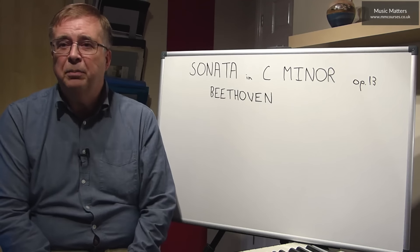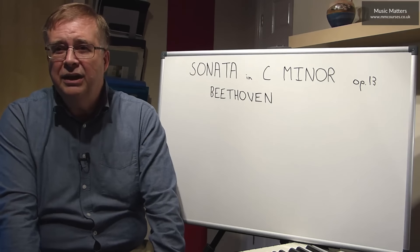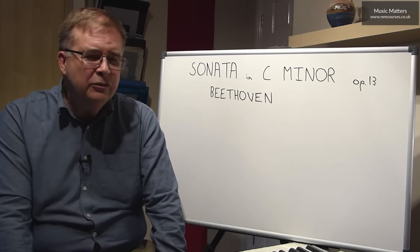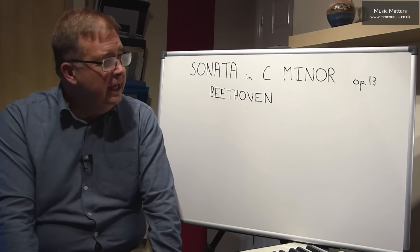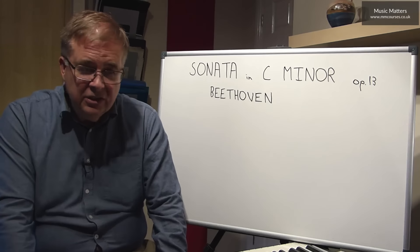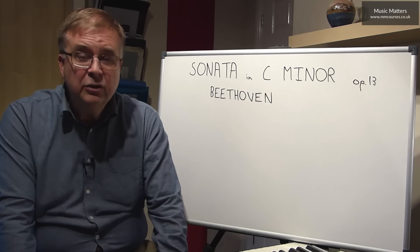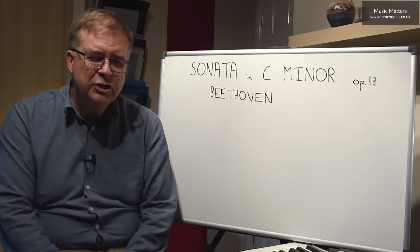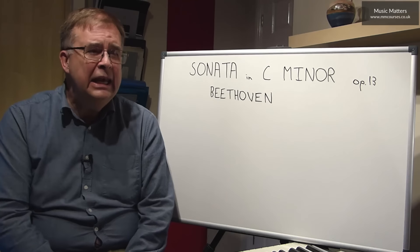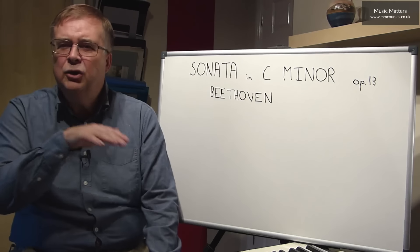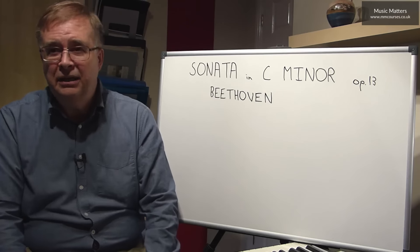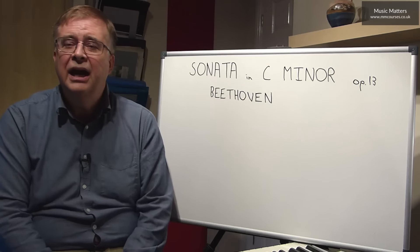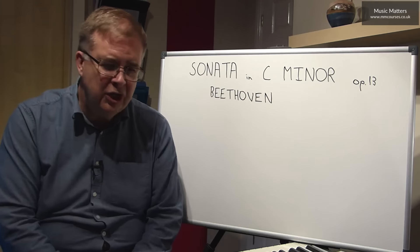This sonata is also known as the Pathétique. It's not a title that Beethoven gave to it, but certainly the title that his publisher favoured. Written in 1798, when Beethoven was 27, and published in the following year. Dedicated to his great friend Prince Carl von Lignowski, and it comes in three movements. We then have a very beautiful Adagio Cantabile as the second movement, and a rather more light-hearted rondo to finish.